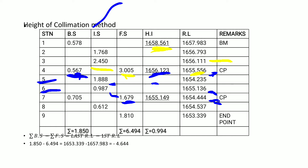Station 7 is another change point, meaning we need a new height of instrument. We add the reduced level at station 7, 1654.444, to the backsight reading of 0.705 to get 1655.149, which is our new height of instrument.